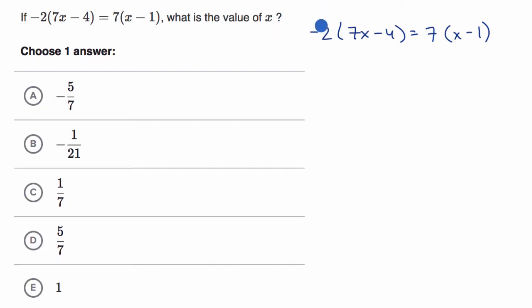The most obvious way to do that is to distribute the negative two onto this expression. So it's going to be negative two times seven x is negative 14 x. And then negative two times negative four, make sure to pay attention to those signs, negative two times negative four is positive eight.